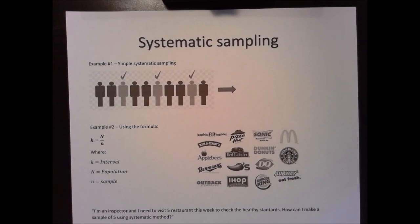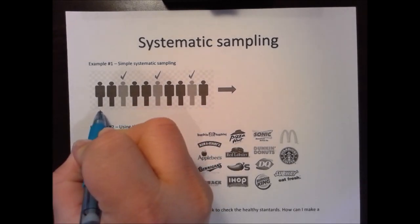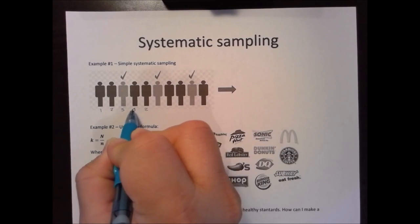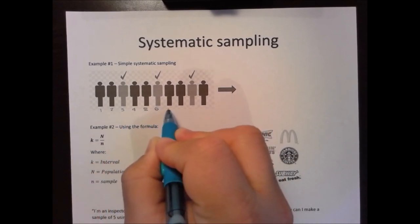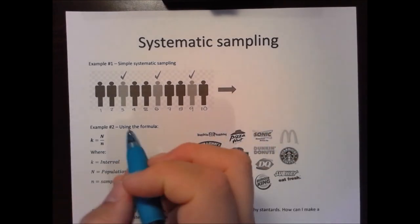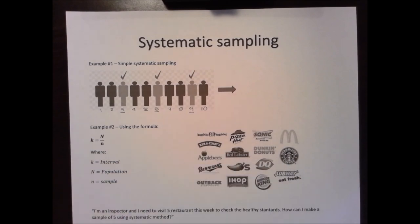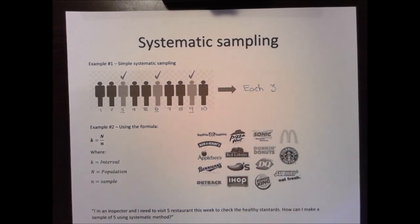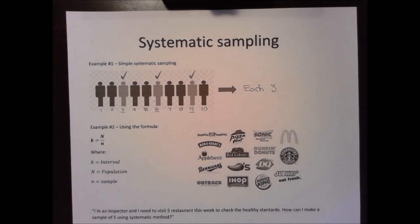Can you see this image? If we label the people here, we observe something interesting: one, two, three — three is selected. Then four, five, six — six is selected. Then seven, eight, nine — nine is selected. Ten, and so on. What is the relation between three, six, and nine? The relation is that you select every third element. This is a systematic sample.